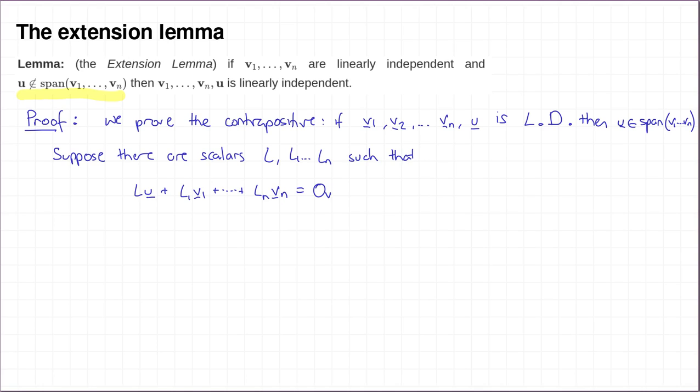Now it can't be that L was zero, because if it was, then we'd have L1V1 plus and so on up to LnVn equal to the zero vector with not all of the Li's equal to zero. And that's a contradiction to the vectors V1 up to Vn being linearly independent.